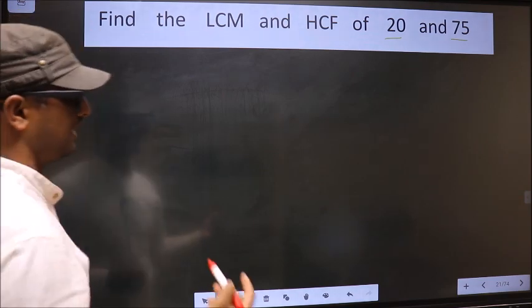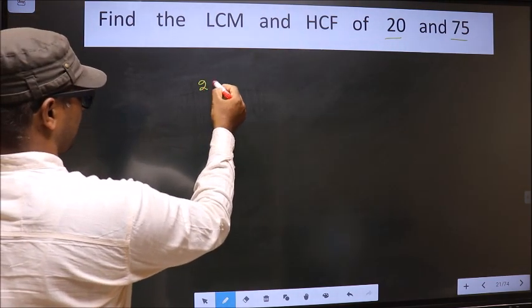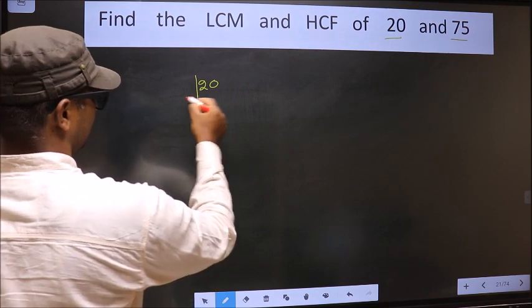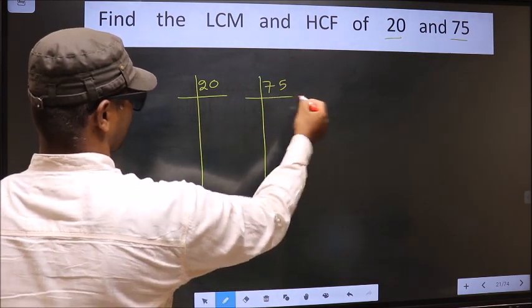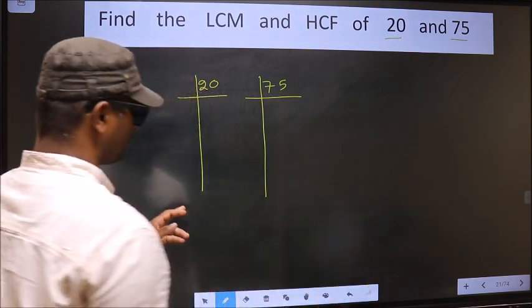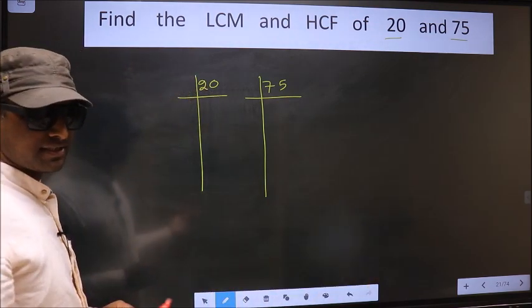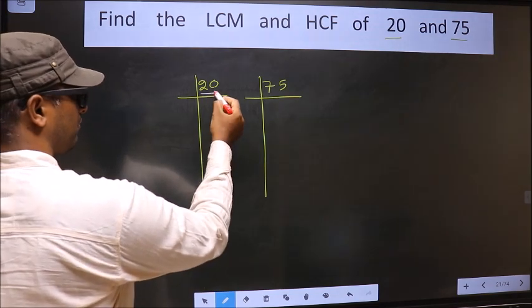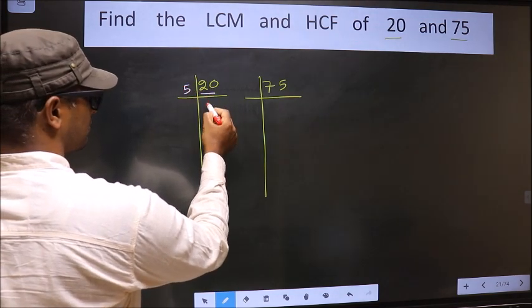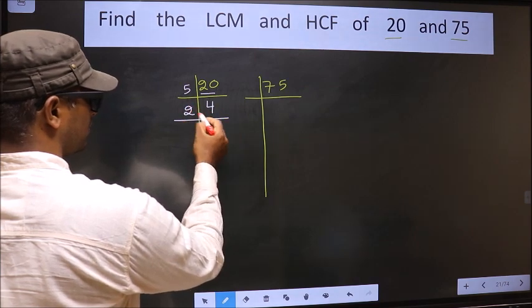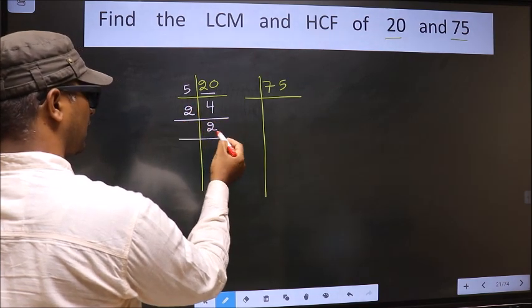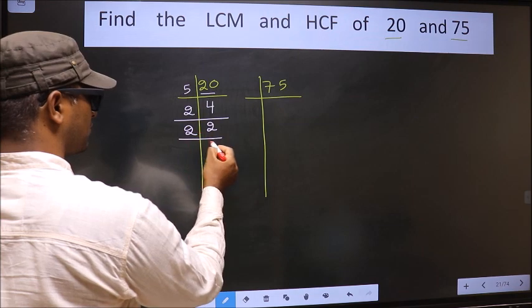We write 20 and 75. For 20: 5 divides 20 giving 4. Next, 2 divides 4 giving 2. Then, 2 is a prime number, so 2 divides 2 giving 1.